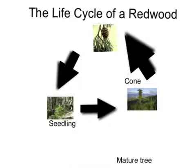The life cycle of a redwood is in three stages. The first stage is the cone. During this stage, the cone falls off from a redwood. The female cone meets the seeds. After the seedling gets out of the cone and begins to grow, a new stage begins.